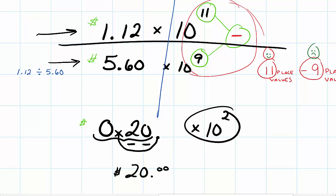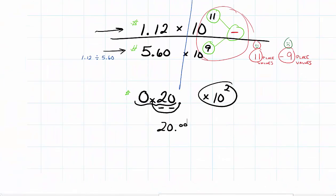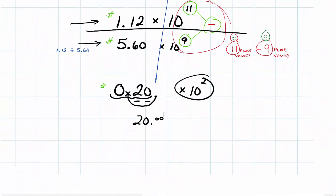That's right. So really, we know it's not money. But how many times bigger is 1.12 times 10 to the 11th compared to 5.60 times 10 to the 9th? It would be 20 times bigger.